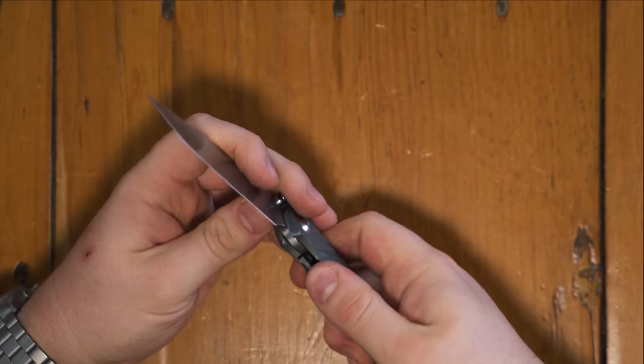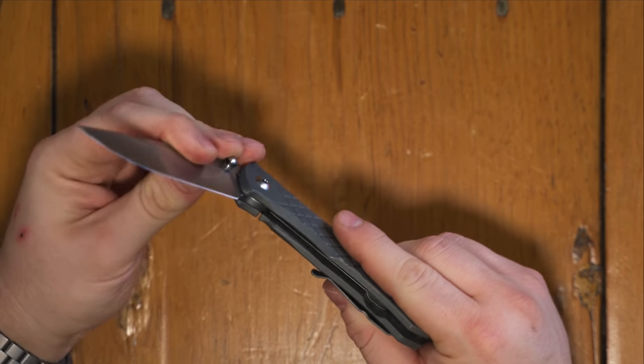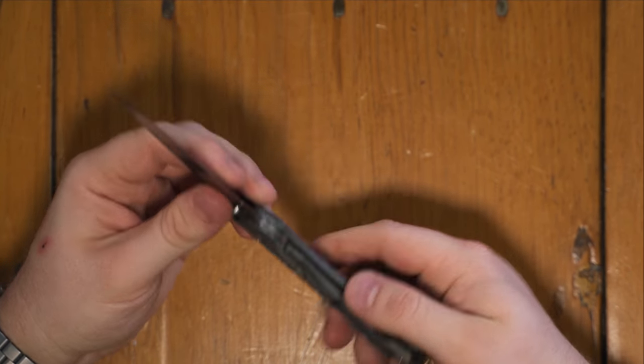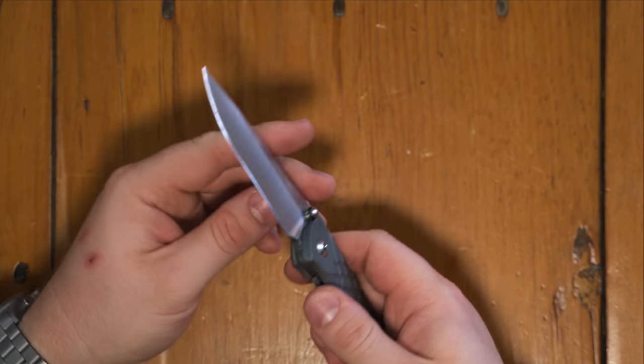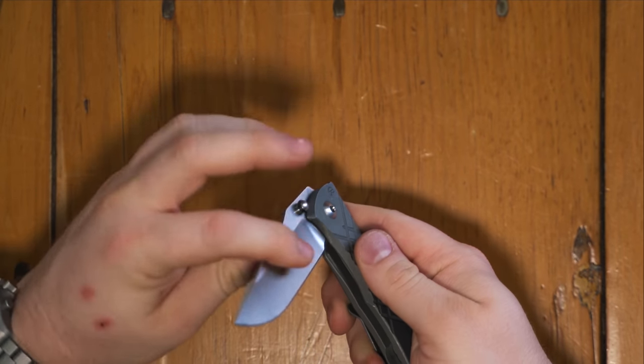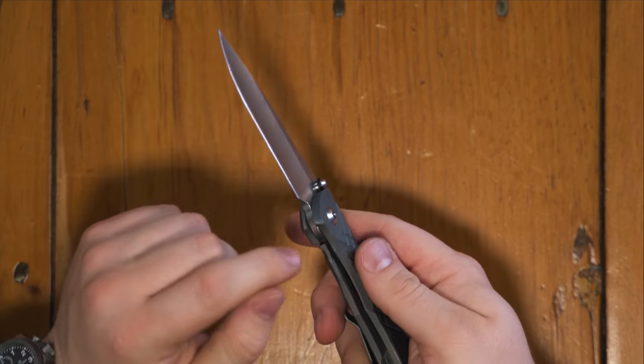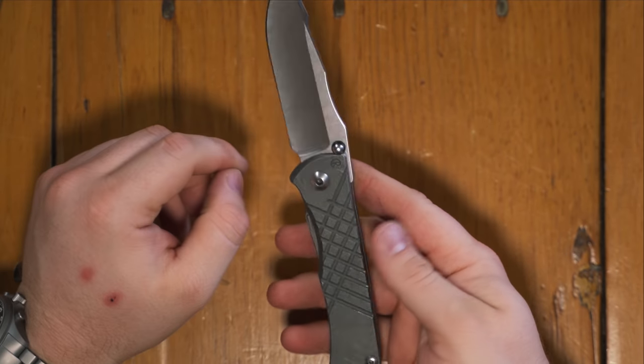Of course, since this is a Chris Reeve knife, it is on phosphor bronze washers and a titanium frame lock and this one has the ball detent that also works as the lock interface. So your detent ball is the same ball that interfaces with the lock face on the blade, which is a really cool design. Very, very sturdy.